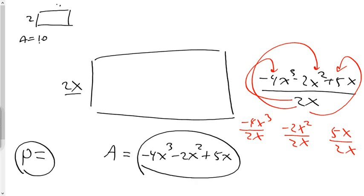And if we have all three terms divided by 2x, and we divide the coefficients, you get negative 2x cubed divided by x is x squared. Negative 2 divided by 2 is negative 1, or just negative. x squared divided by x is just x, or negative 1x. And 5 divided by 2 is 2.5, or a positive 2.5. And x divided by x cancel each other out.